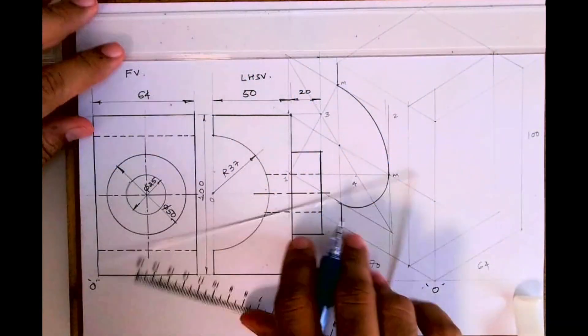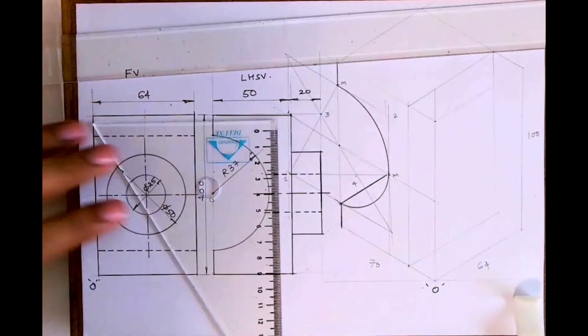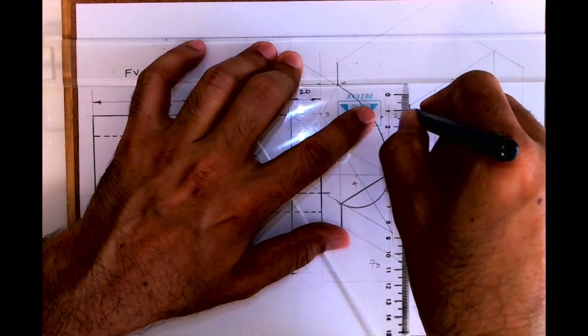So by doing this we have completed semi circle. Then we'll complete this part, we are just darkening it. So we are done with this part, the semi circle part.